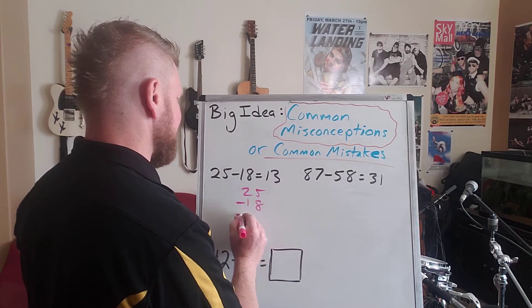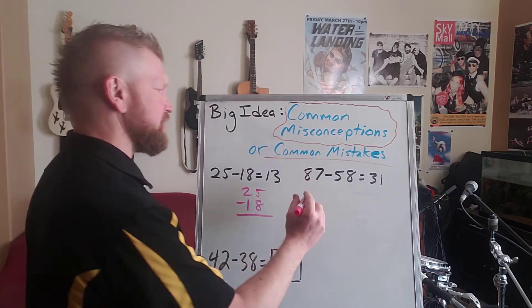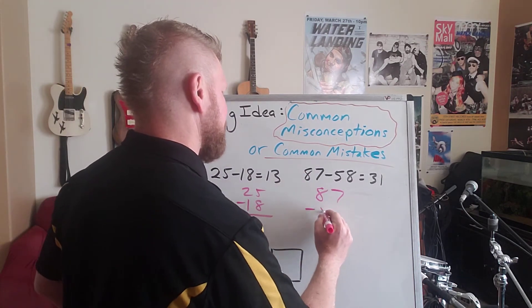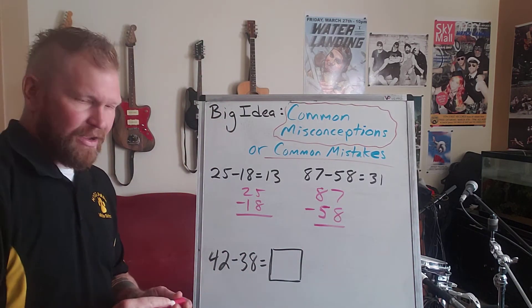25 minus 18. And keep in mind, the answer they got was 13. Maybe write this one this way, 87 minus 58.